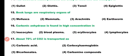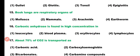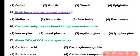Question number 15. Book lungs are the respiratory organs of: mollusks, mammals, arachnids, or earthworms. Correct answer is option 3. Book lungs are the respiratory organs of arachnids.